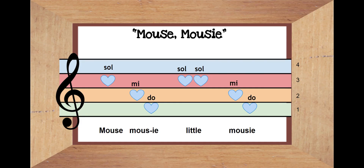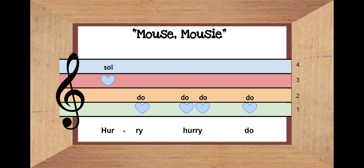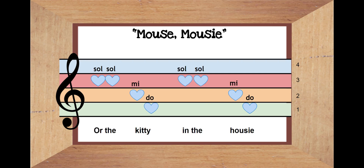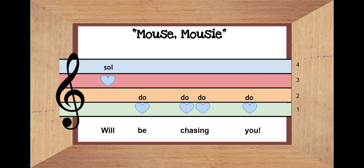So, me, doe. So, so, me, doe. So, doe. Doe, doe, doe. So, so, me, doe. So, so, me, doe. So, doe. Doe, doe, doe. The three houses were so, me, and doe.